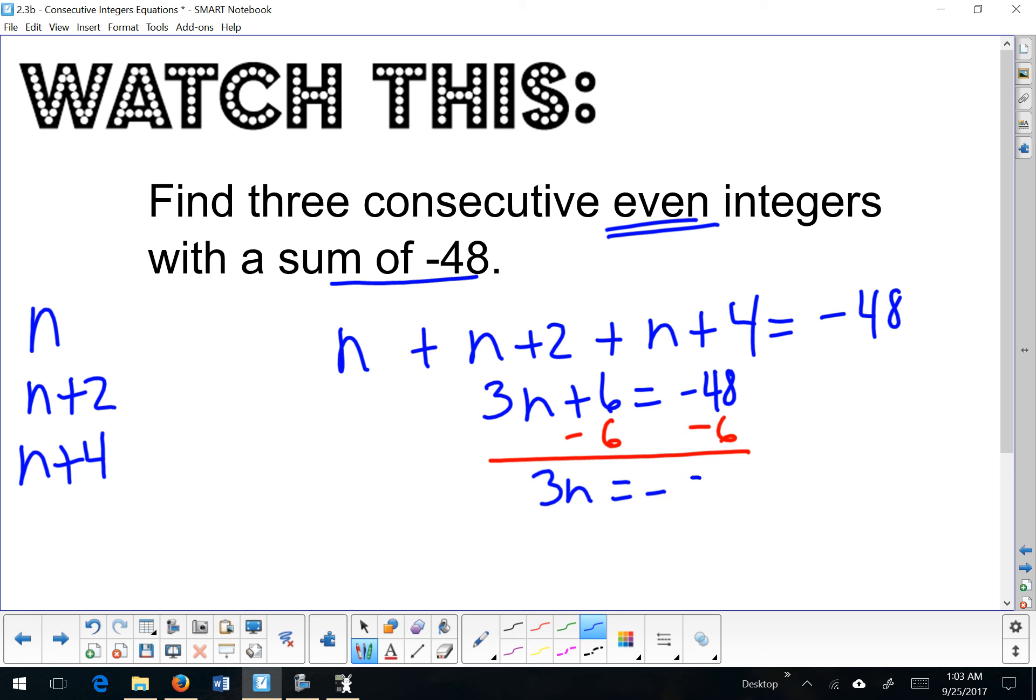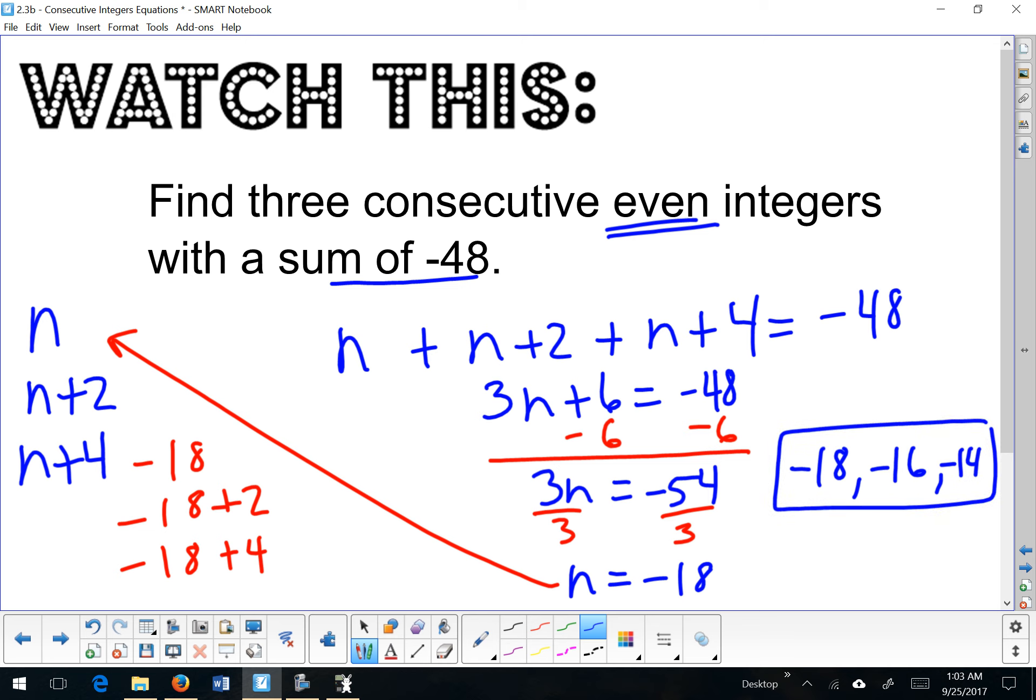I think that's negative 54. And n is equal to negative 18. Again, don't box this because that's only part of your answer. Negative 18 plus 2 and negative 18 plus 4 gives me solutions of negative 18, negative 16, and negative 14.